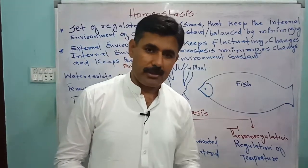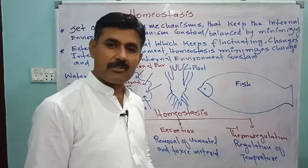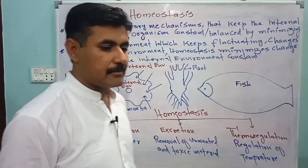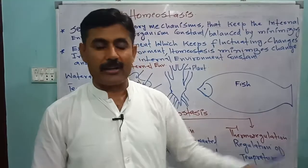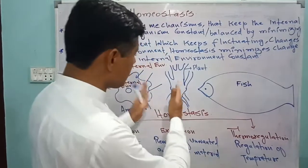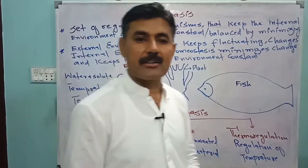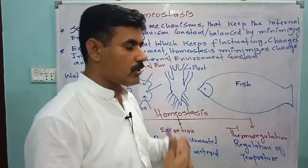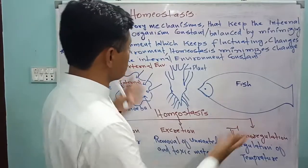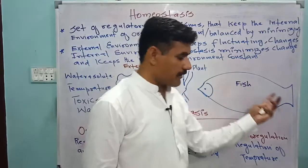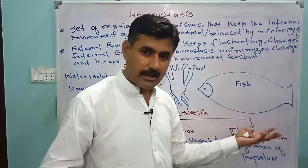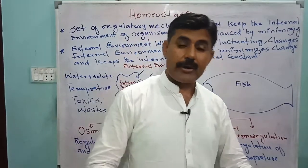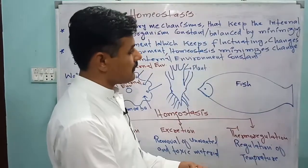The mechanisms that keep an organism's internal environment constant are called homeostasis. This applies to plants as well — if the external environment changes, it brings changes in the internal environment, and plants perform a set of mechanisms to keep their internal environment stable. Similarly, for all animals — fish, humans, cockroach, or any organism — whether they live in aquatic, terrestrial, or marine environments, every environment has its fluctuations.